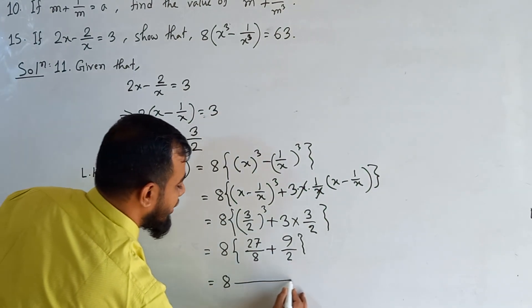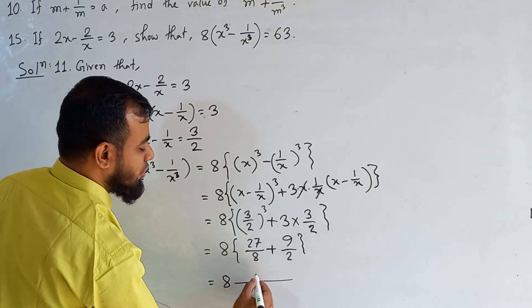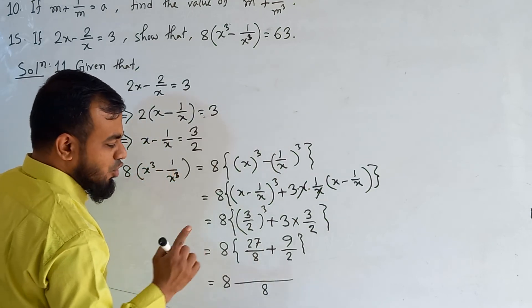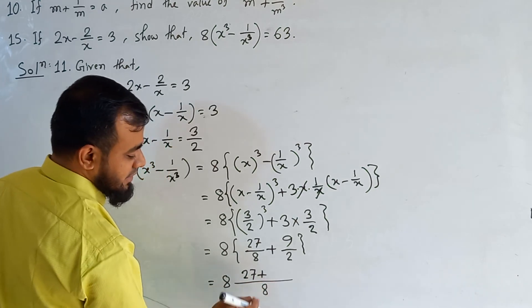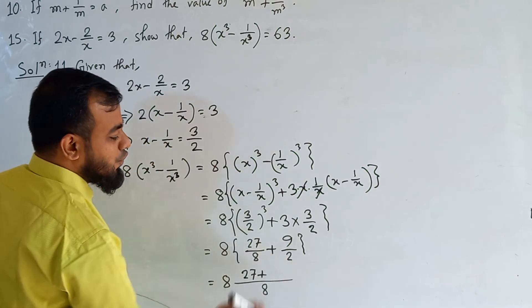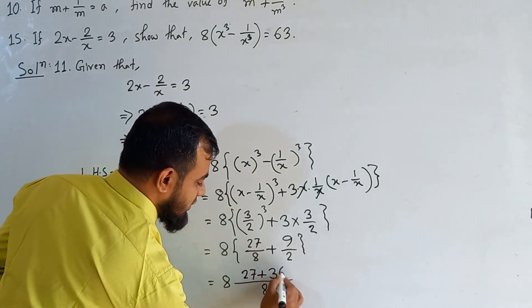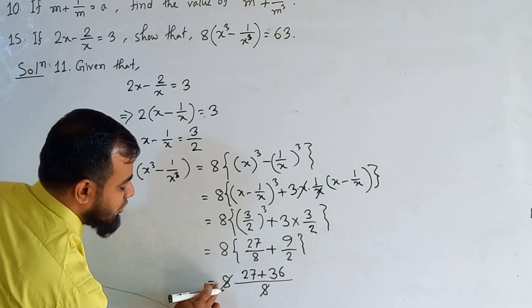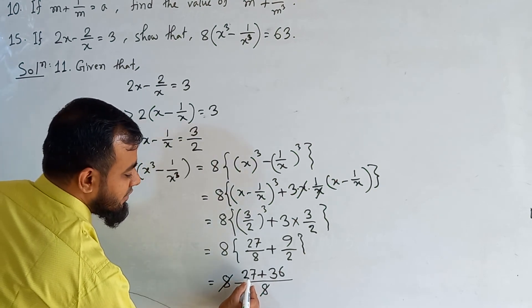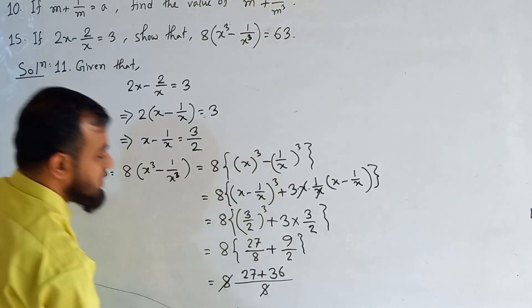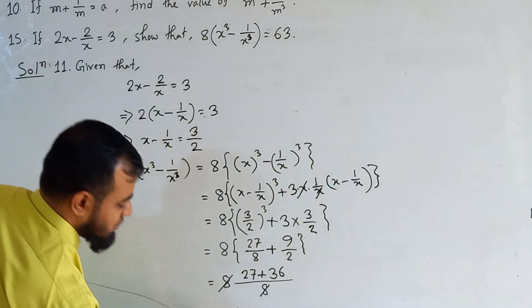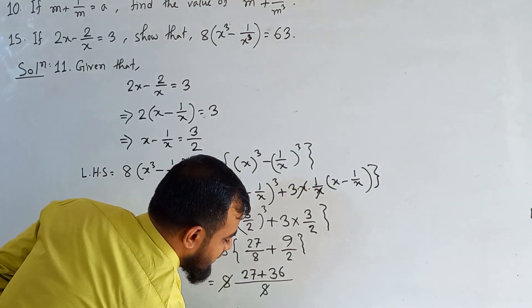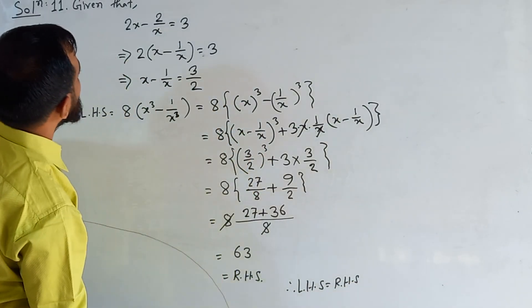It is 8 into 27 over 8 plus 9 over 2. LCM of 8 and 2 is 8. Dividing 8 by 8 gives 1, times 27 is 27. Dividing 8 by 2 gives 4, times 9 is 36. The 8 in numerator and denominator cancel. So 27 plus 36 equals 63, which is our right hand side in the question. Therefore left hand side equals right hand side — shown.